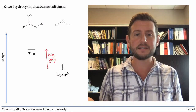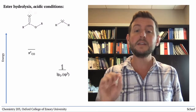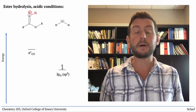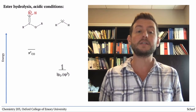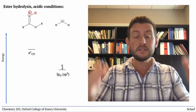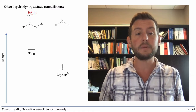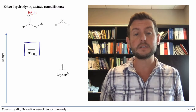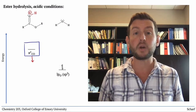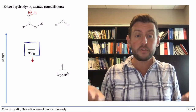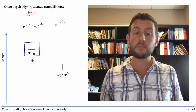But what happens with acid catalysis? Do you remember the role of H+? It protonates the carbonyl group, giving it a positive charge. Positive charge lowers orbital energies, so by protonating the carbonyl group, we lower the energy of its CO pi star orbital — its LUMO — thereby making it much more electrophilic. Now the nucleophilic water doesn't have to work so hard to reach the LUMO, and the reaction can proceed more rapidly.